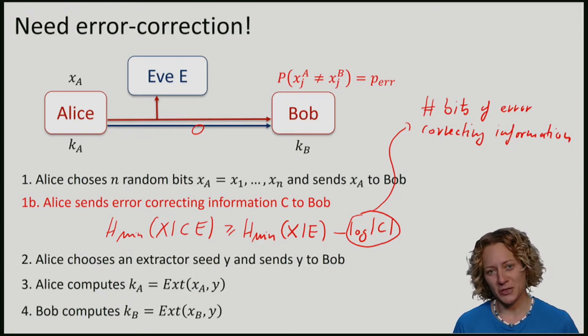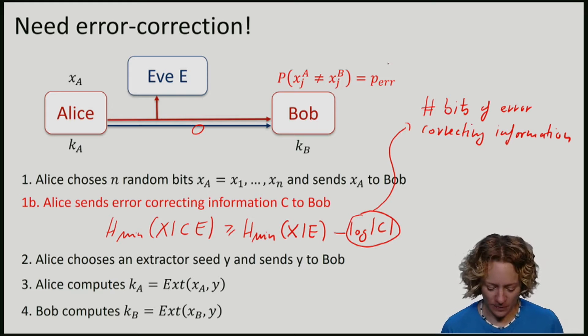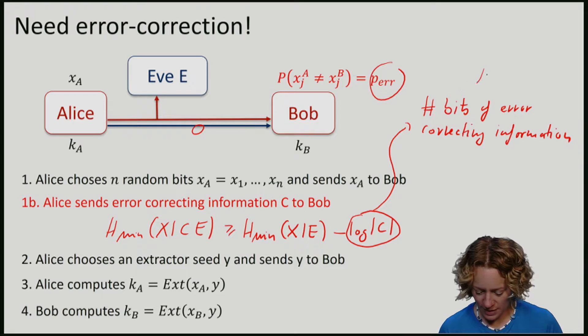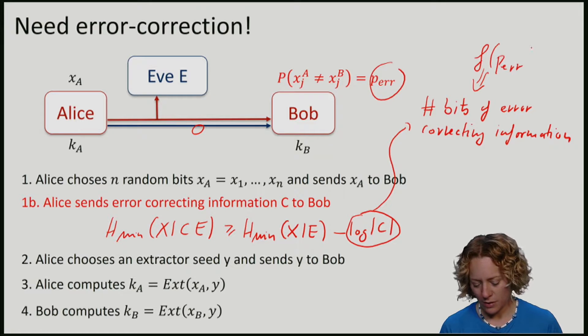As you might imagine, how much error-correcting information we need to send depends crucially on the probability of error.